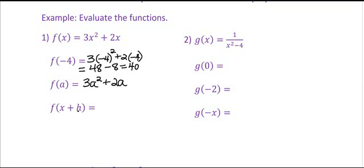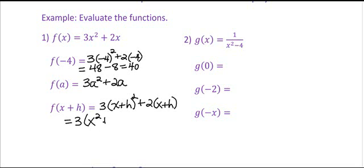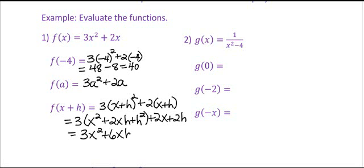What about f of x plus h? That would mean to replace the letter x with what is inside parentheses, which is x plus h. Digging back into your algebraic skills, to square x plus h we would get x squared plus 2xh plus h squared. Then distributing gives us plus 2x plus 2h. So finally we would come up with 3x squared plus 6xh plus 3h squared plus 2x plus 2h. That doesn't look very pretty — nothing else we can do to that at this time.